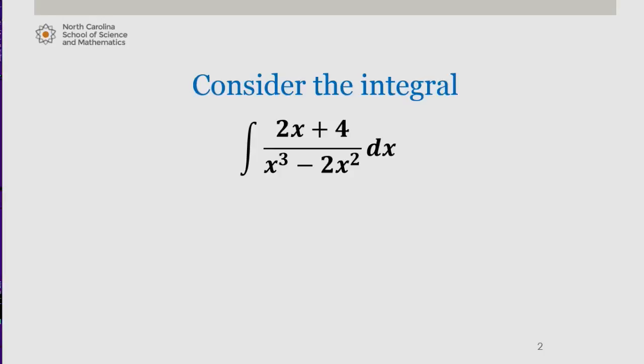Let's focus on the integrand 2x plus 4 over x cubed minus 2x squared. We notice that this denominator can be written as x squared times x minus 2.